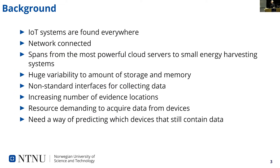IoT systems are found everywhere today, including smart homes and personal devices, industrial Internet of Things, smart manufacturing, environmental monitoring, smart agriculture, smart infrastructure, power grids, and so on. As the name suggests, the devices are Internet-connected either directly or going through a gateway. An IoT system spans quite a huge variety of devices, from big clusters of servers running cloud subsystems to the tiniest devices with huge restrictions on both power consumption and size.